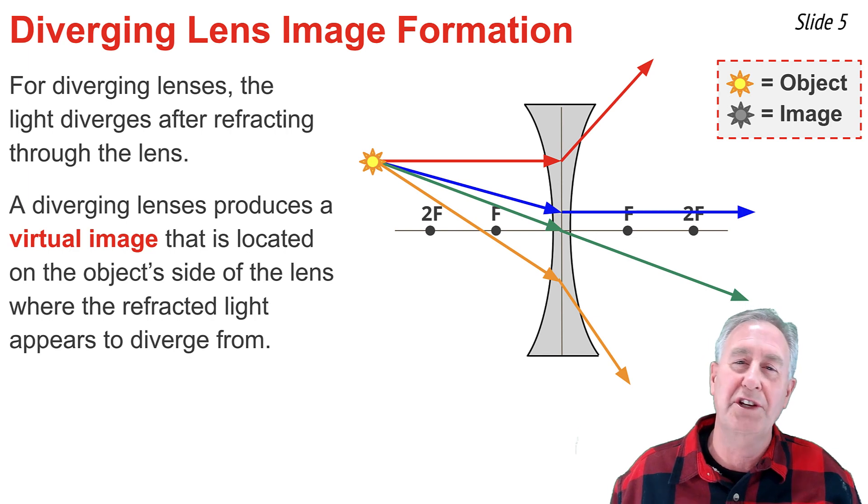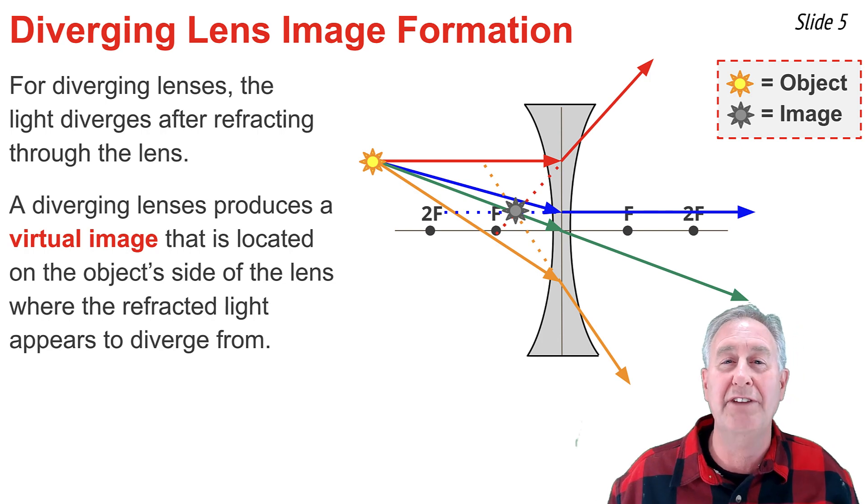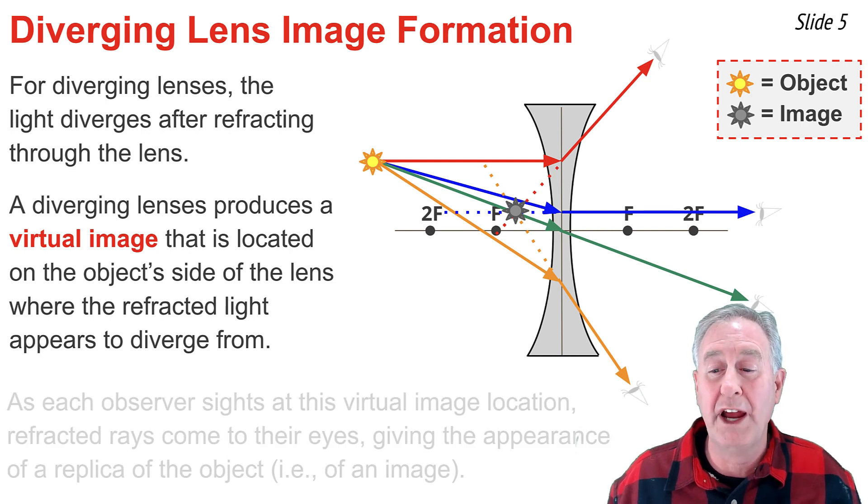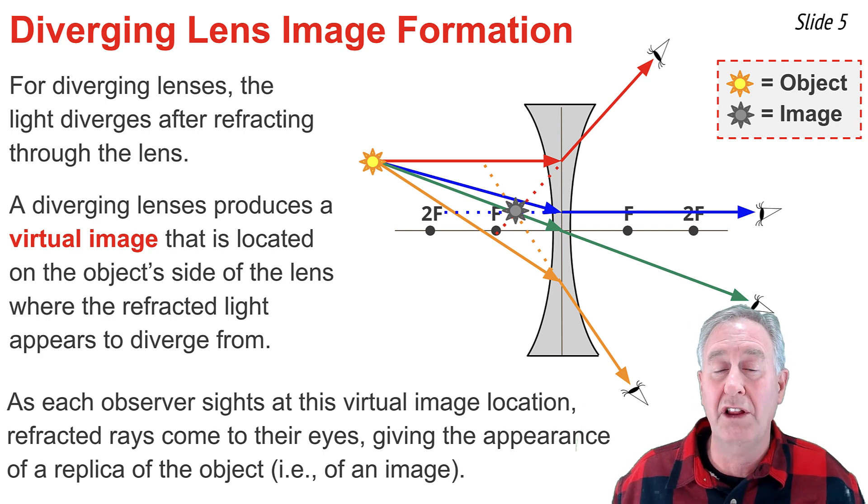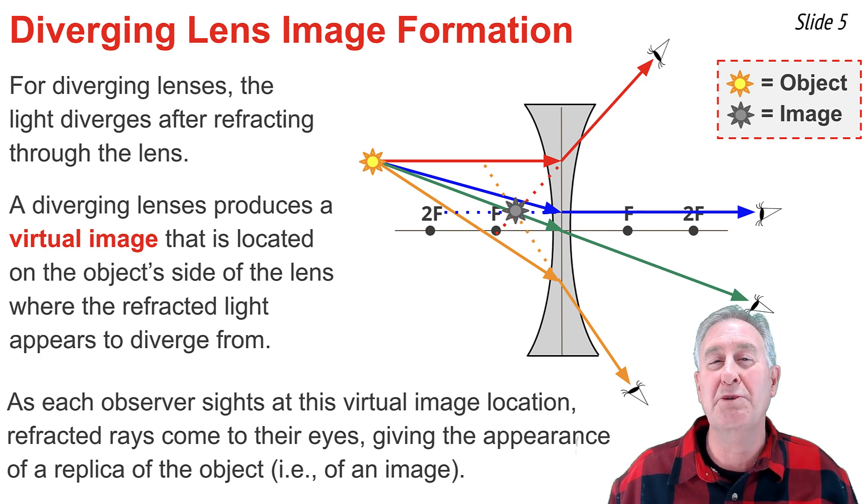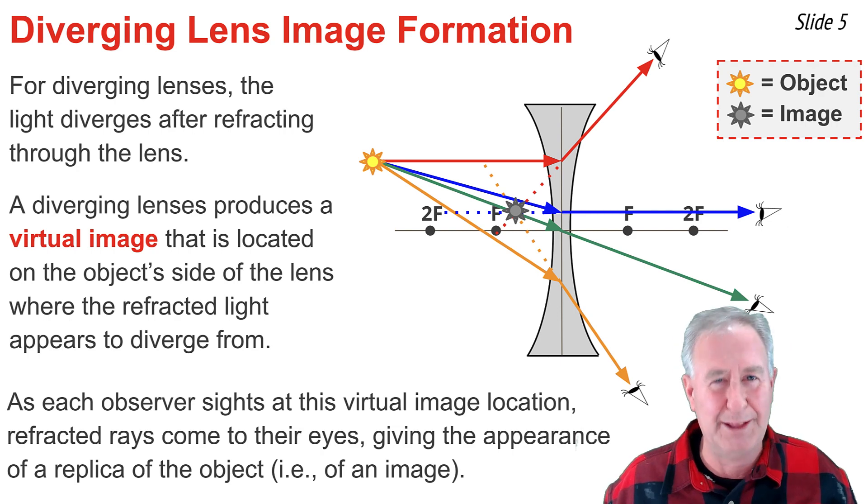This image location can be identified by taking each of the refracted rays and tracing them backwards to the object side of the lens, where they will eventually intersect. The intersection of the extensions of these refracted rays is the image location, and any observer that sights along a line of sight defined by these refracted rays and directed at the image location will see a replica or representation of the object at that location.